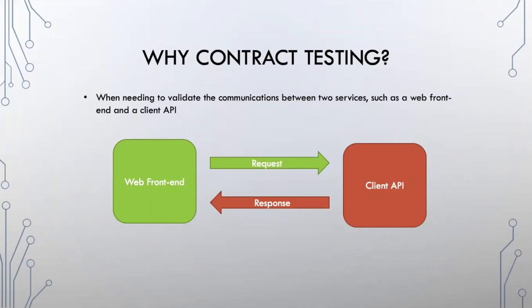There are multiple ways of testing this scenario. We can use integration tests, end-to-end tests, or something similar. The problem with integration tests is that they're very expensive, slow, and sometimes flaky. The benefits of using contract testing are really to minimize that flakiness, add reliability, and get a faster result.